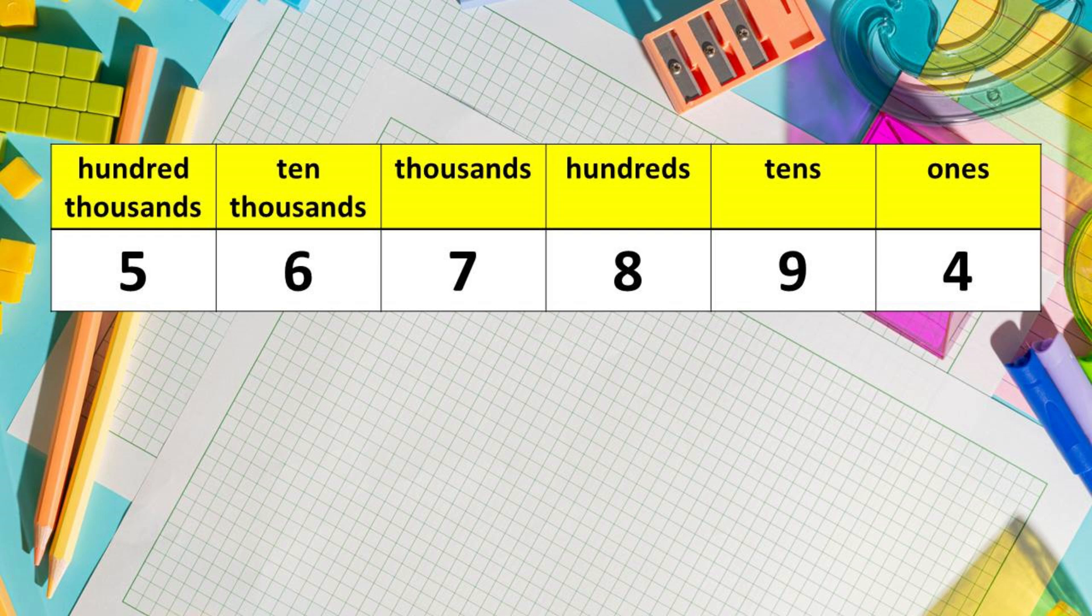Lastly, we have the value of the digit 4. It is in the ones place. So we are going to multiply 1 times 4. The answer is 4. So the value of the digit 4 is 4.